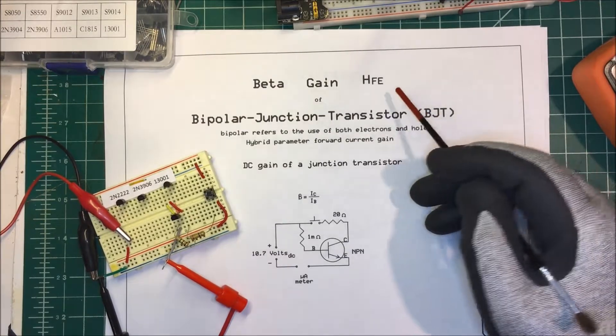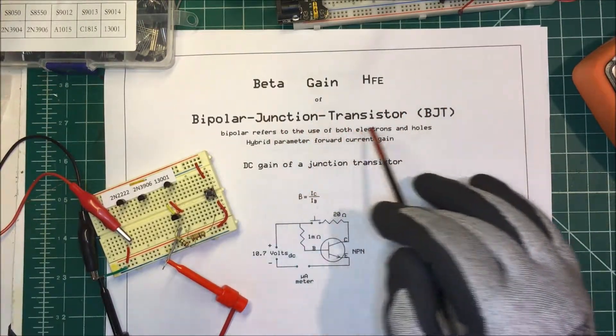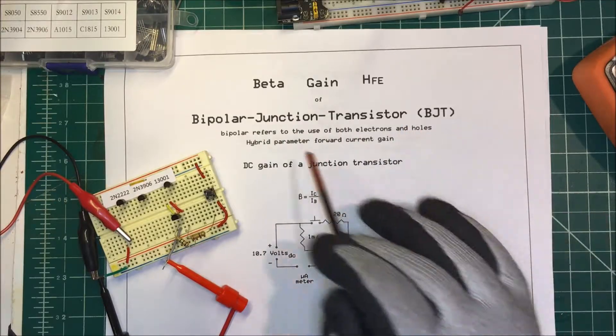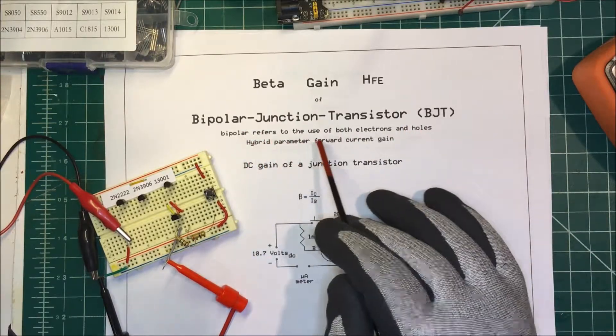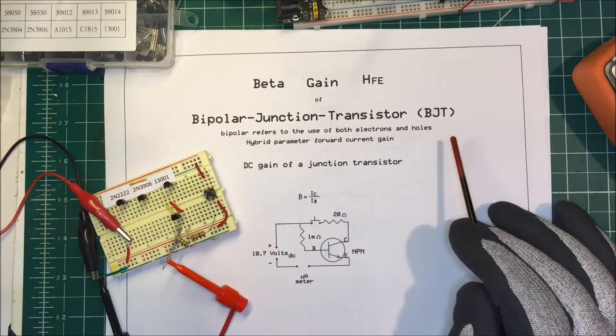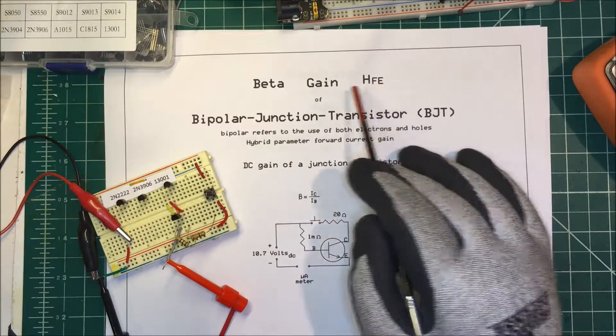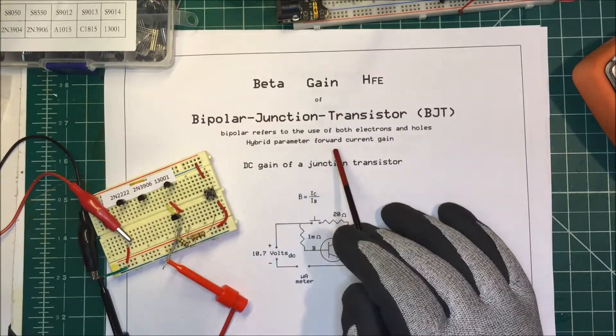Let's talk about the beta gain or hfe of a transistor—it's all the same thing. We're talking about bipolar junction transistors, BJTs. Bipolar just refers to the fact that they use both electrons and holes. This hfe you'll see on the data sheets, and that's just your gain. It's a hybrid parameter forward current gain.